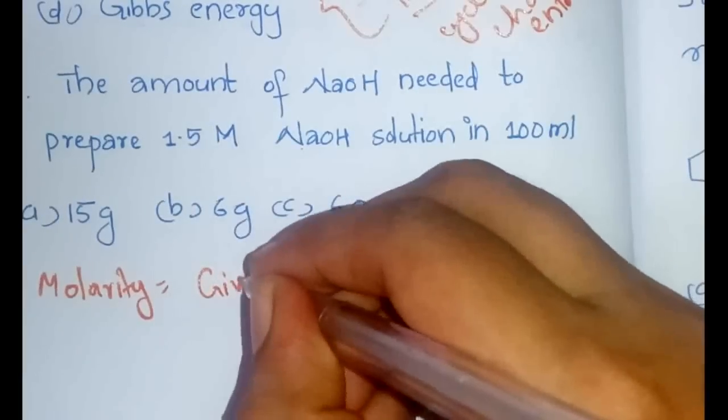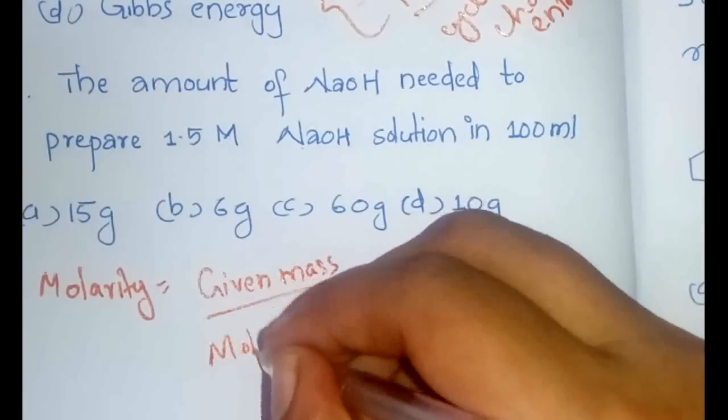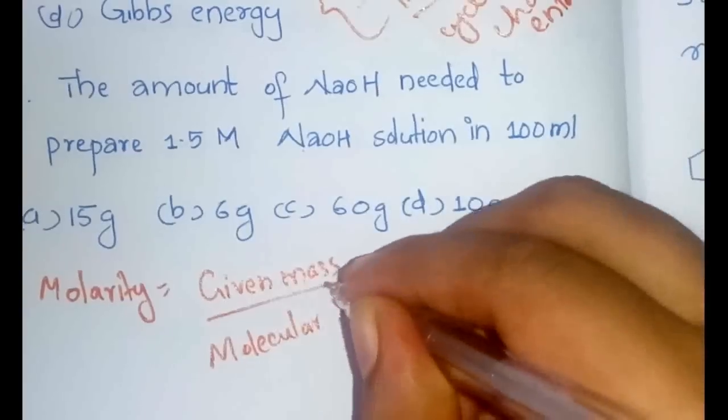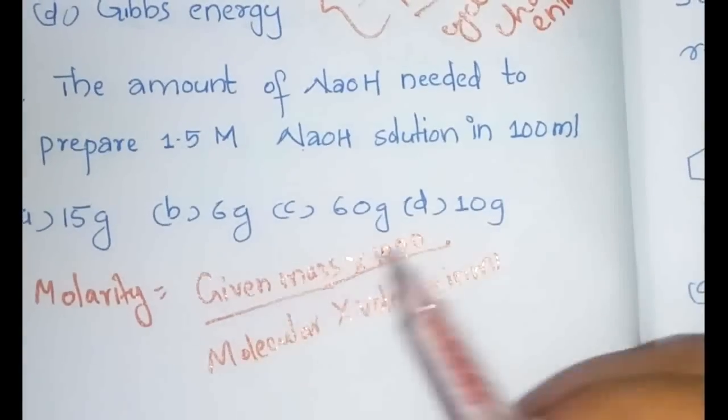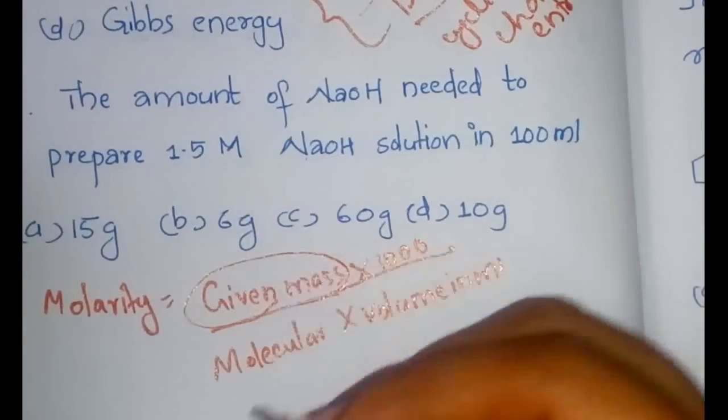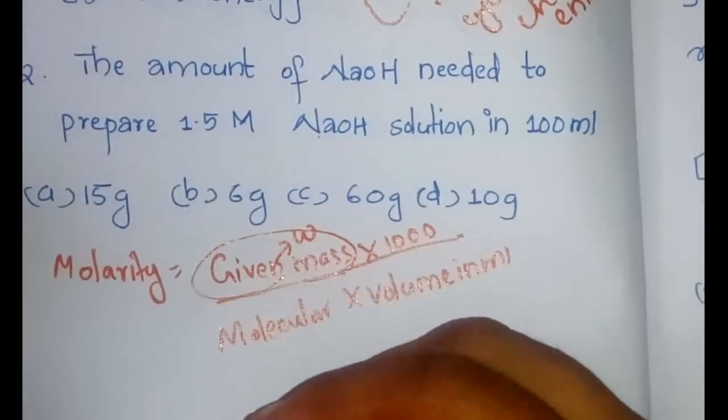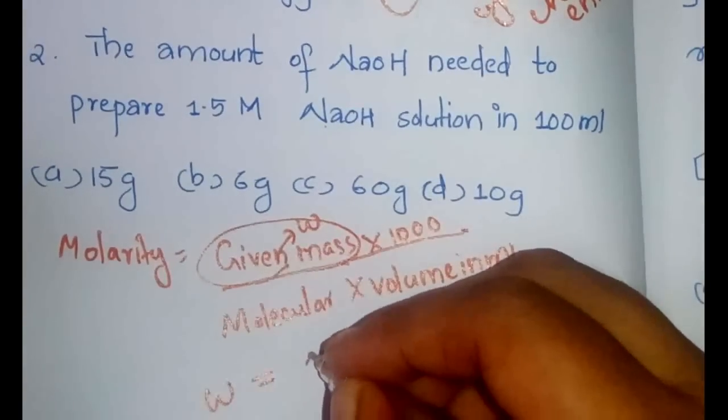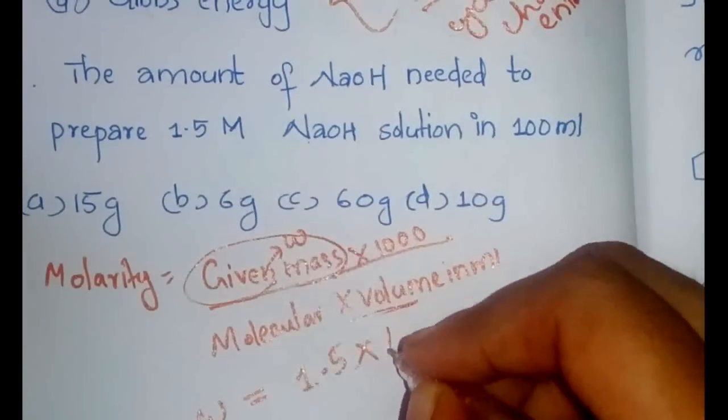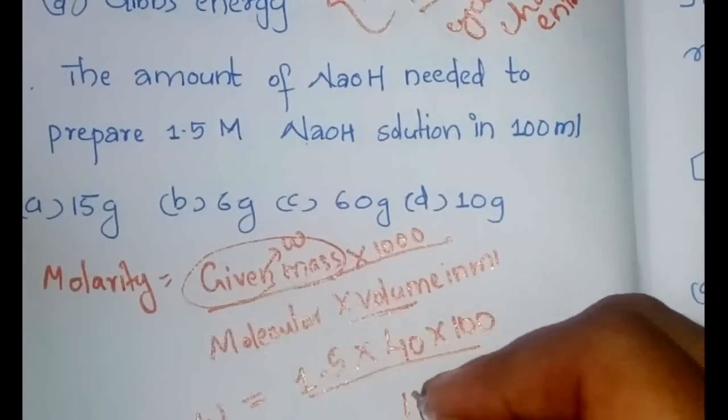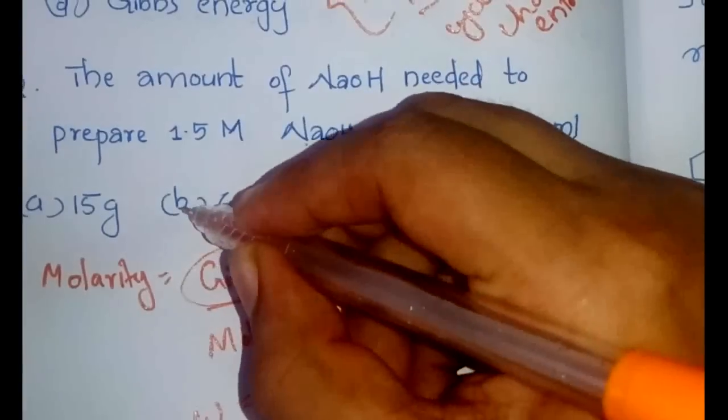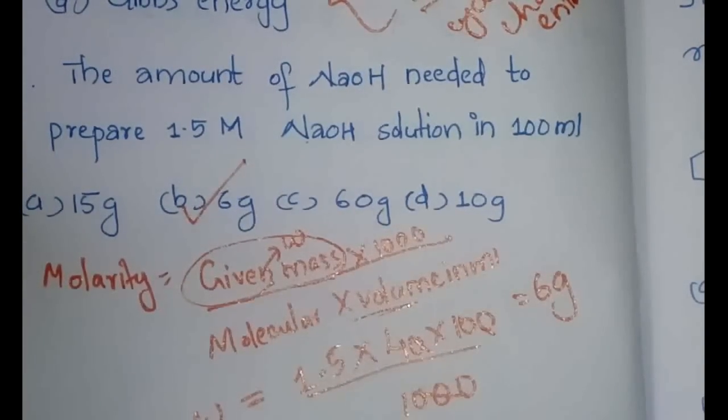given mass by molecular mass into the volume in liters. If it is given in ml then volume in ml and in the numerator will be having 1000. So every quantity that we need for the equation is here. What we need to find is the given mass W. So W is equal to 1.5 into molecular mass is 40 and the volume is 100 in ml divided by 1000. So the zeros will be going and 4 into 1.5 will be 6 gram. Option B, 6 gram will be our answer.